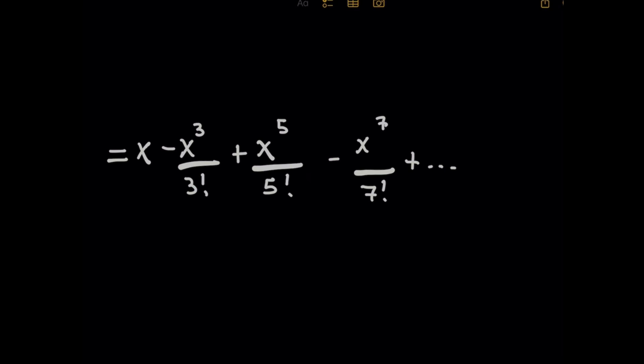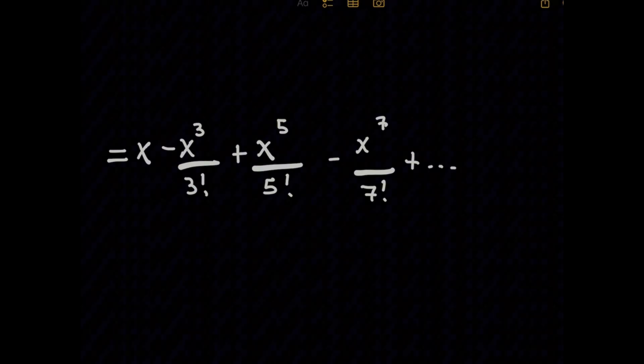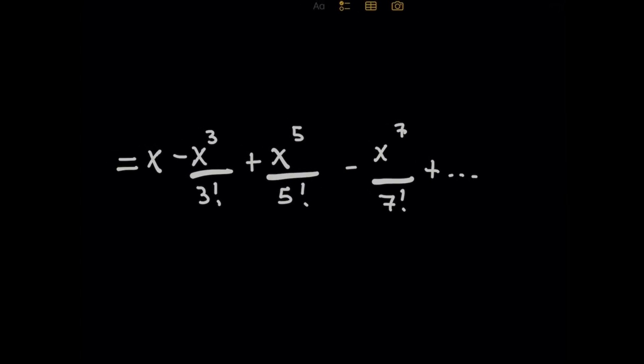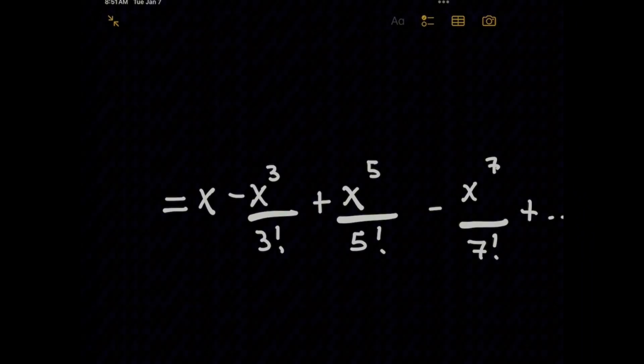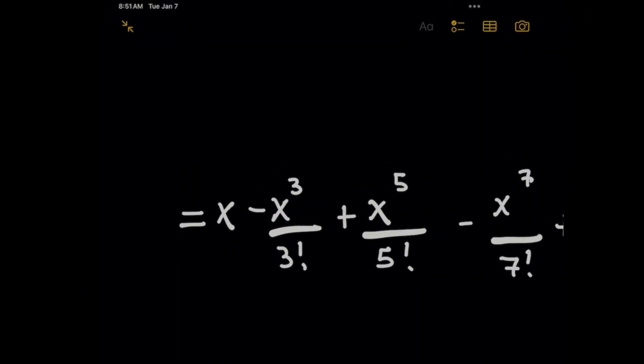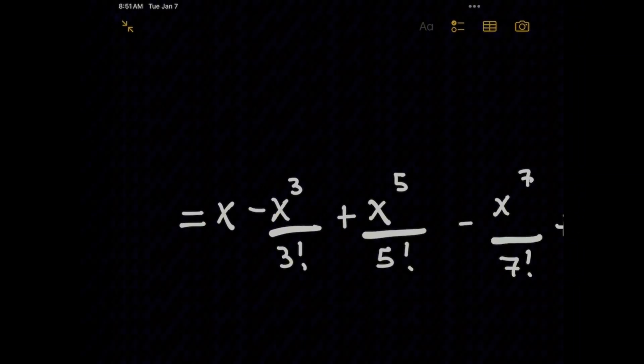So with that being said, for general approximations, we can safely say that all of these terms here, other than the first one, the x, are approximately going to be zero. And this expression itself is a good approximation.